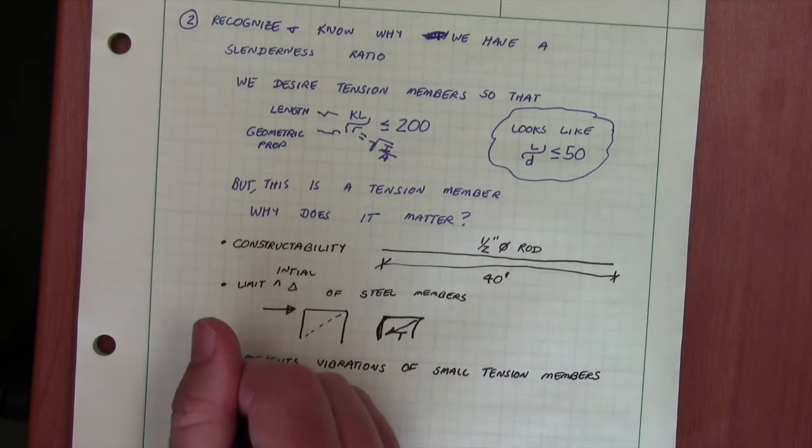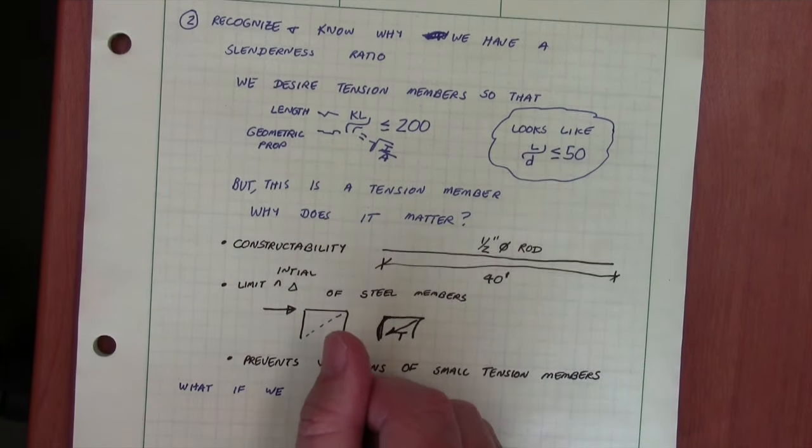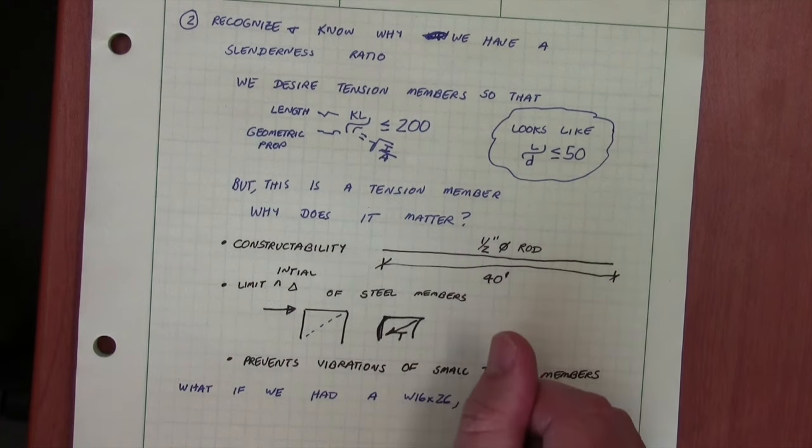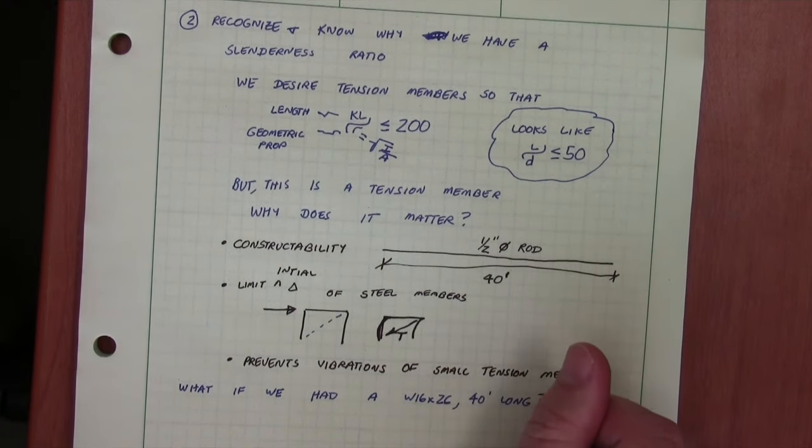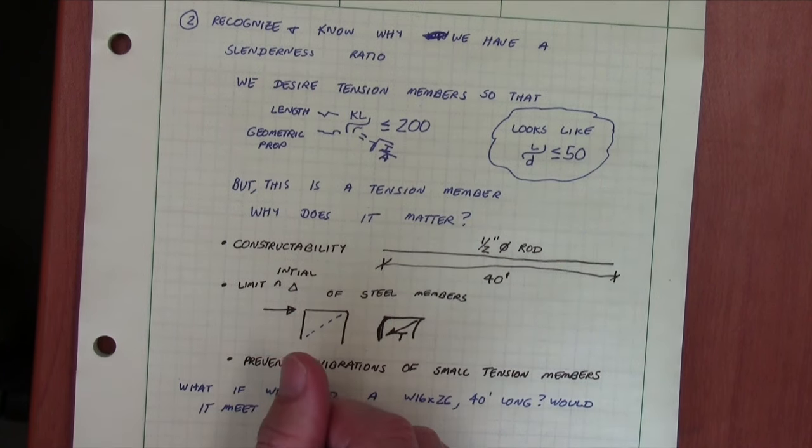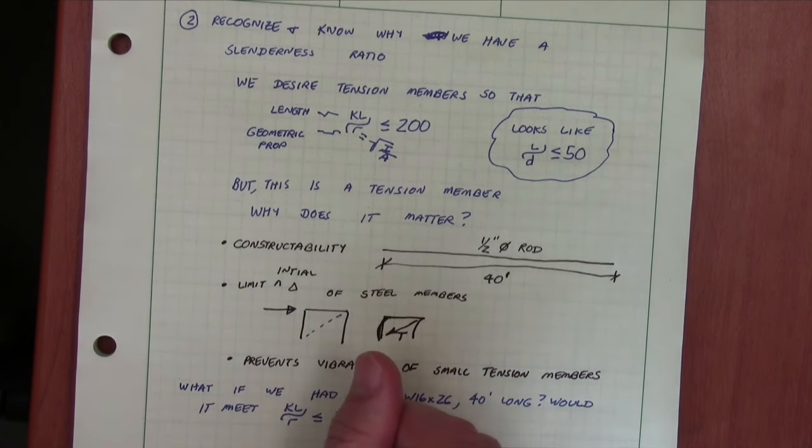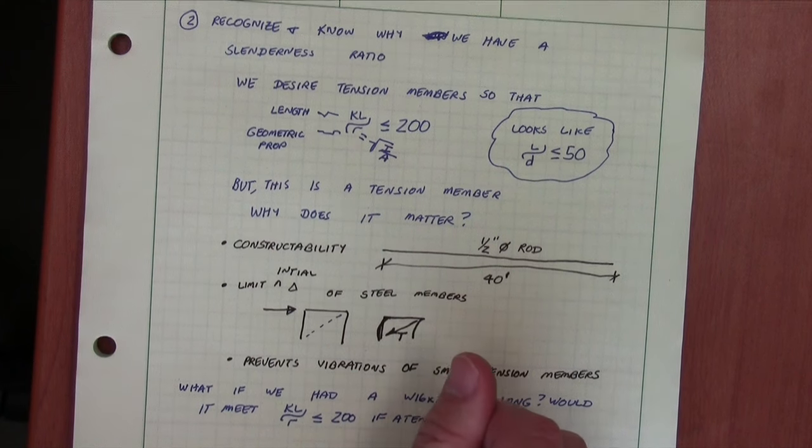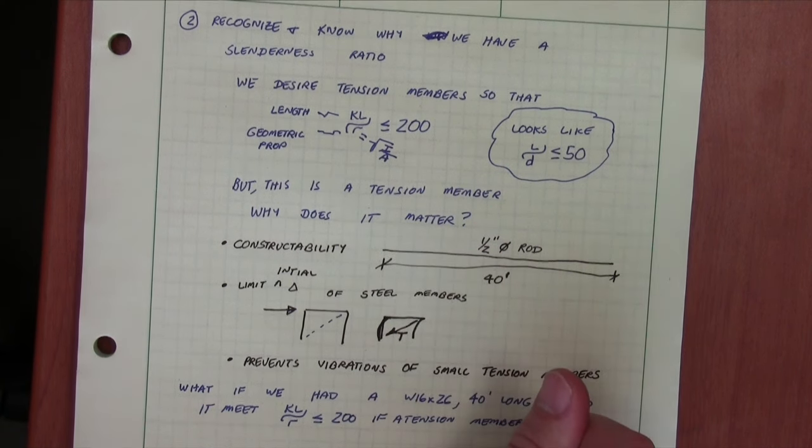So now let's look at an example in practice. Let's look at a W16 by 26 tension member 40 feet long. Perhaps this was a cord of a big truss or some type of bracing element. And the real question is, does it meet KL over R less than 200?